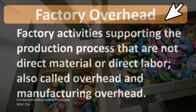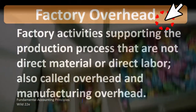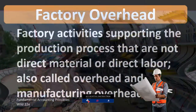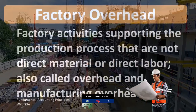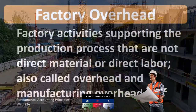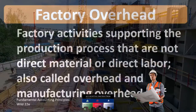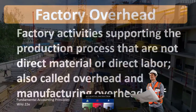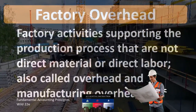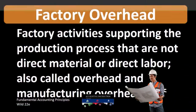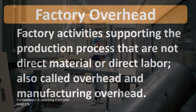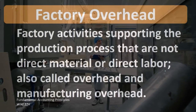Note that this definition is saying everything other than direct materials and direct labor is factory overhead. That is one way to think about factory overhead — it's really going to be that bucket where we put everything that we cannot categorize as direct materials or direct labor within a manufacturing process.